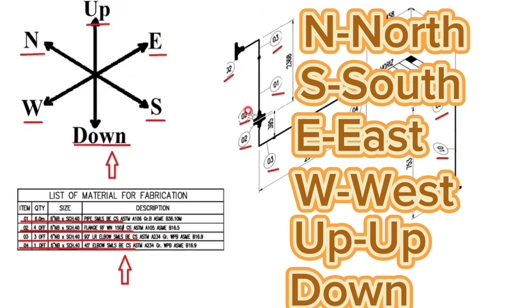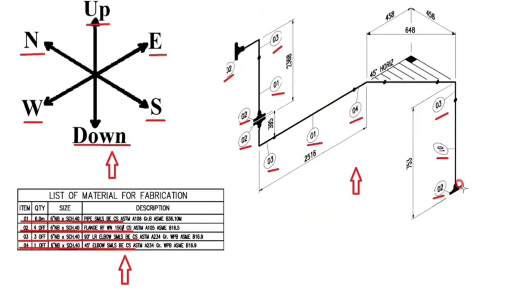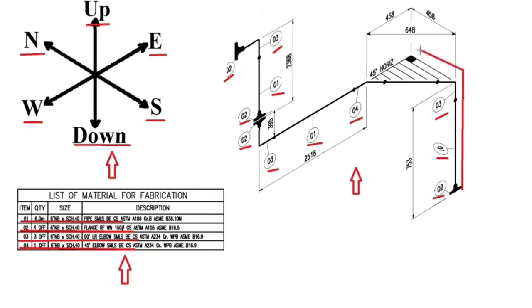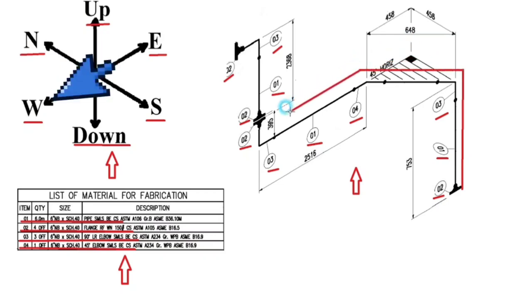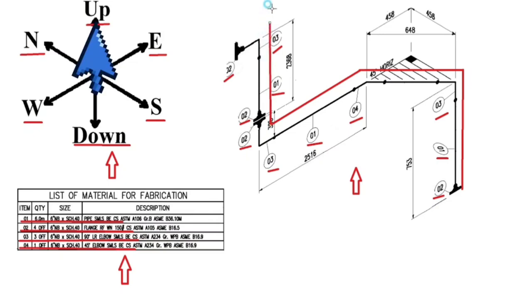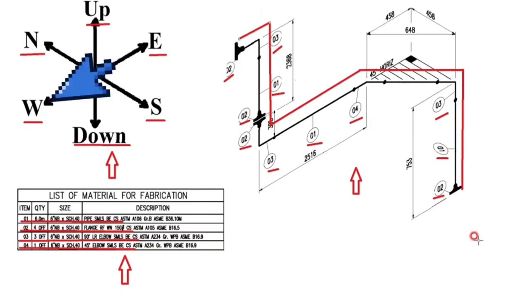Let's try to read this pipe isometric using these directions. We will start reading from this point. The pipe travels start from this point to the up direction. The pipe will move from this point first north, then turns to the west direction. In this point the pipe travels continue to the north direction. Then the pipeline travels to the up direction. At last the pipe travels to the west direction, and the correct reading of the pipe drawing is completed.